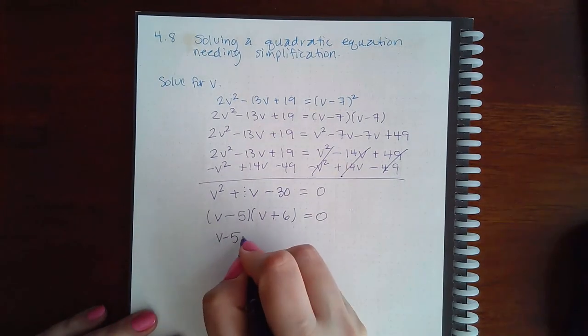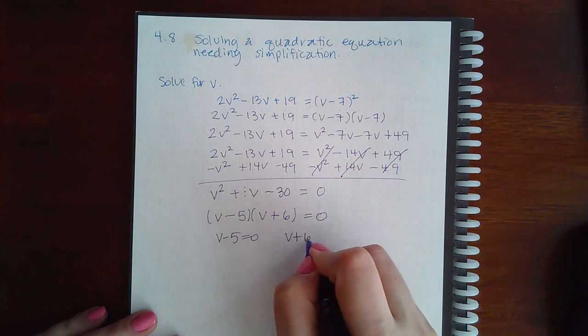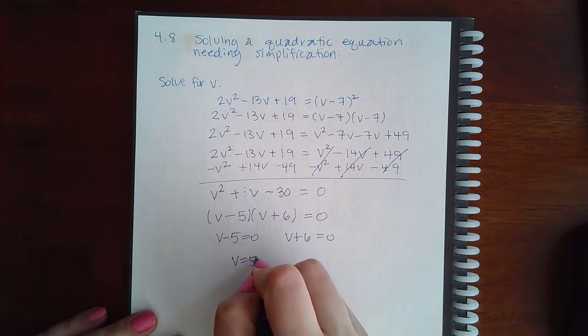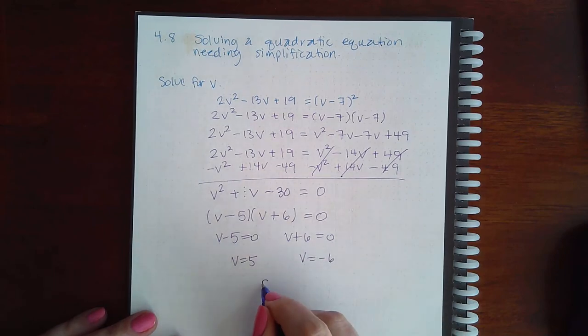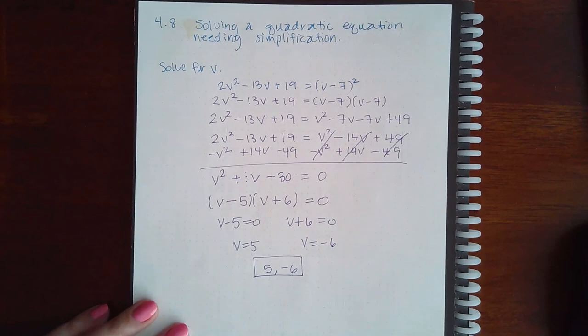Then that is factored completely. Set this factor equal to 0, set this factor equal to 0. Add 5 over to both sides, subtract 6 on both sides. And I get my two solutions: v = 5 and v = -6.